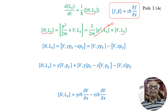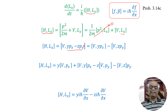Lx can be written by definition as Lx = YPz − ZPy. We separate this commutator into two parts: [V, YPz] minus [V, ZPy].